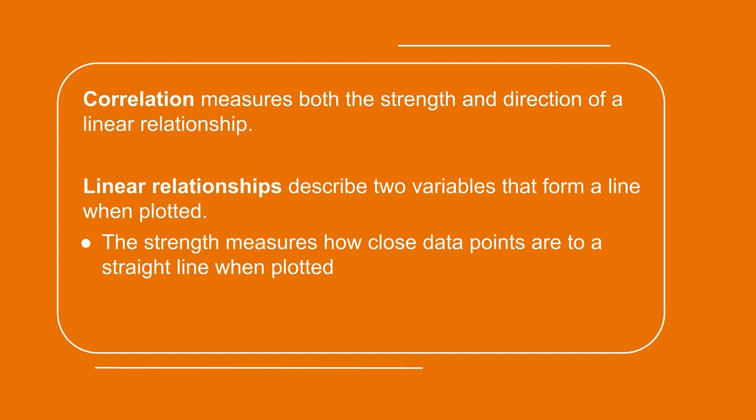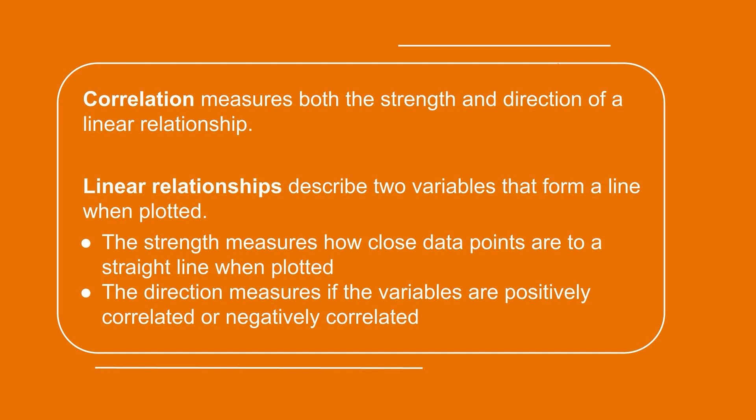The strength of a linear relationship measures how close data points are to a straight line when plotted, and the direction measures that the variables are positively correlated or negatively correlated. For example, height and weight are positively correlated because as height increases, so does weight. However, a relationship such as number of absences in grades would be negatively correlated because the more classes you miss, the lower your grades will be.